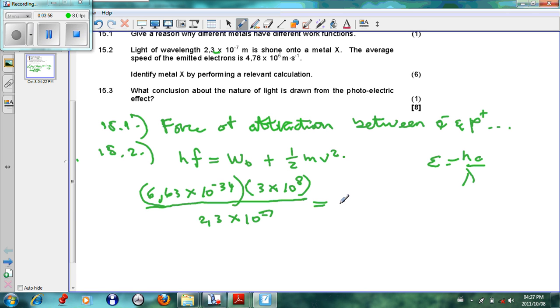So we can use that to calculate the energy of our photon or the light that's given. And then w0 is what we want to find, plus half - the mass of an electron is again given in the data sheet, this is 9.11 times 10 to the minus 31. And the velocity, the average speed is given as 4.78 times 10 to the 5.